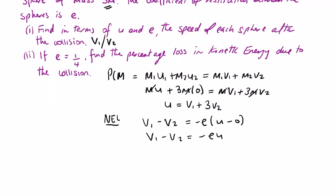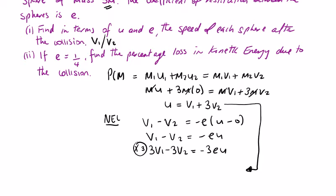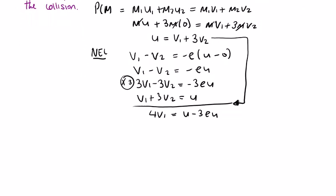If I multiply the Newton's law equation by 3 I can eliminate v2. Adding to the momentum equation: 3v1 + 3v2 + v1 - v2 gives 4v1 = u - 3eu, or 4v1 = u(1 - 3e). So v1 = u(1 - 3e) / 4.